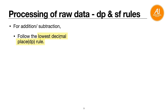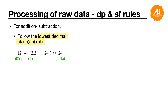For addition and subtraction, follow the lowest decimal place. For example, 24 plus 0.3: 24 is 0 DP and 0.3 is 1 DP. Your calculator gives 24.3, but because you follow the lowest DP rule — which is 0 DP — you round off to 24.